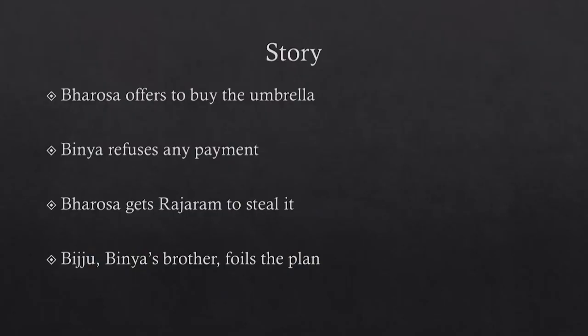One of the people seriously interested in the blue umbrella is Ram Barossa, an elderly shopkeeper who has a tea shop on the road to Theri. He offers to buy the umbrella from Binya, but she refuses any payment and will not part with her favourite object. Eventually Ram Barossa gets his shop assistant, a little boy called Raja Ram, to steal it. Binya's brother Biju foils the plan — there is a fight and Biju snatches the umbrella back and gives it to his sister.